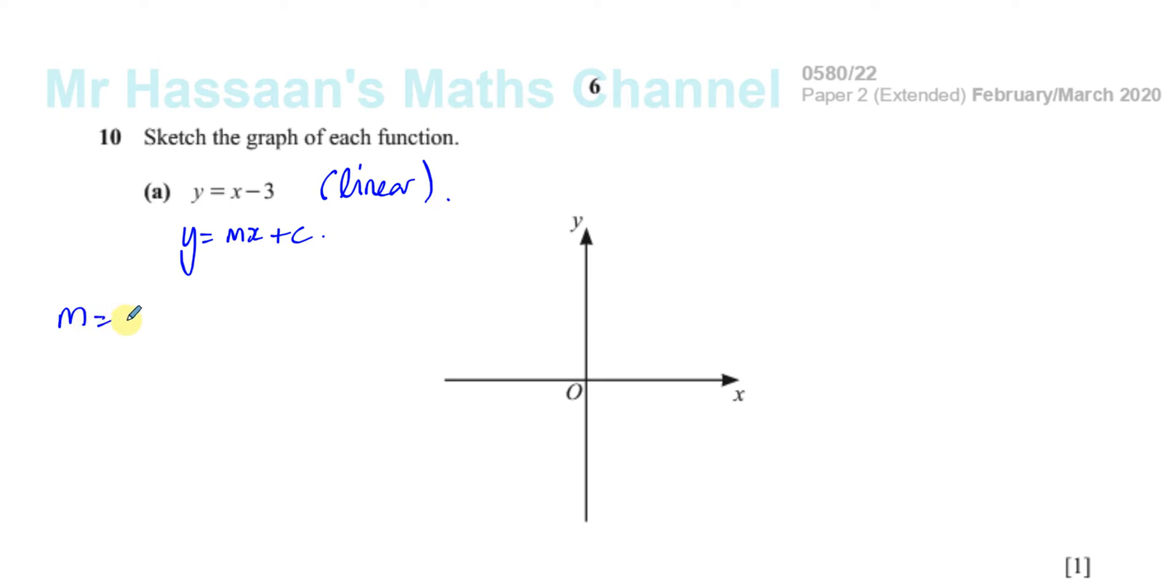We can see here that the m is the coefficient of x, so the m, which is the gradient, is 1. And the c is the y-intercept, which is the constant here, and we can see that that is equal to minus 3. So I know from this information